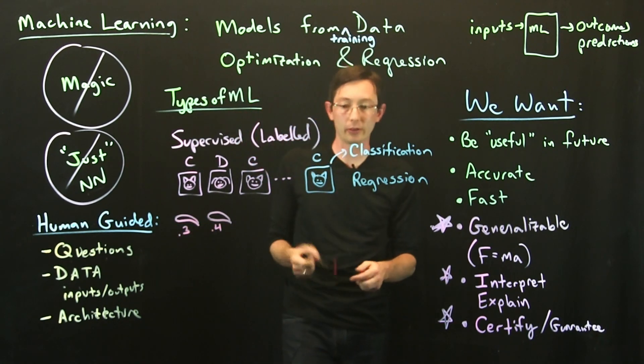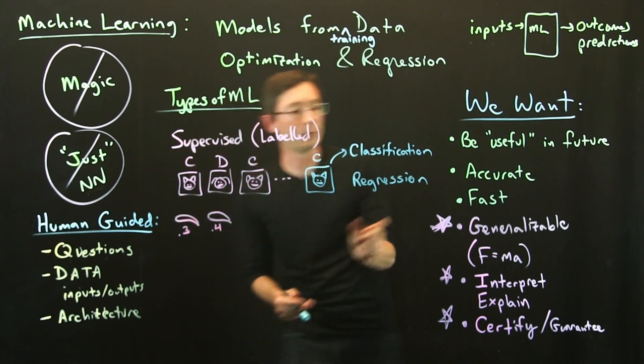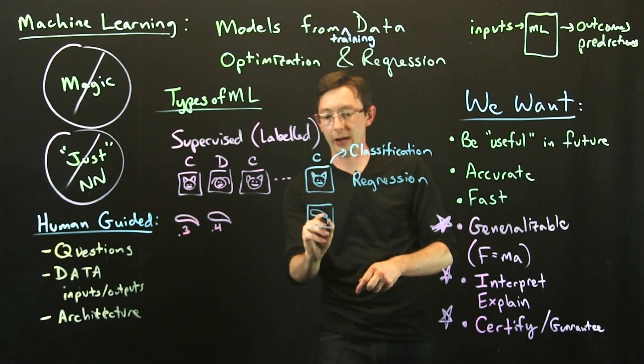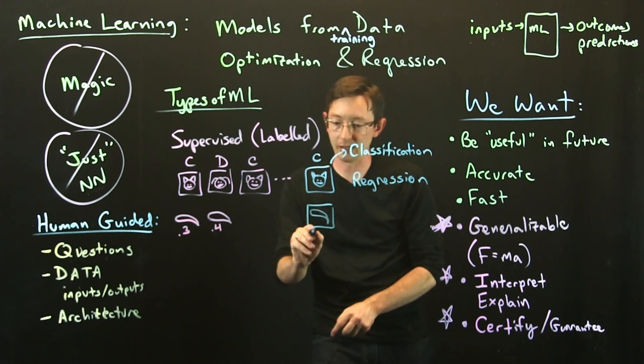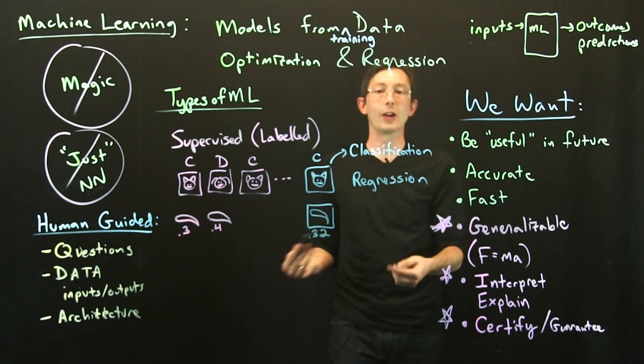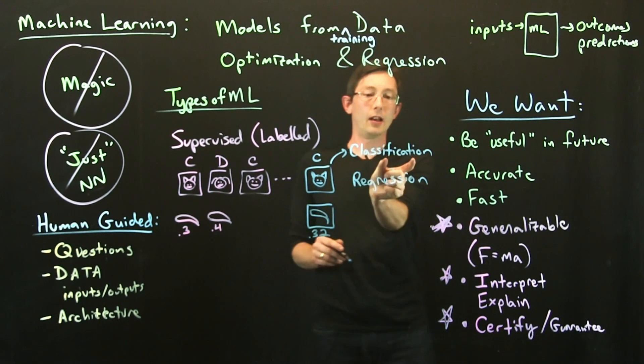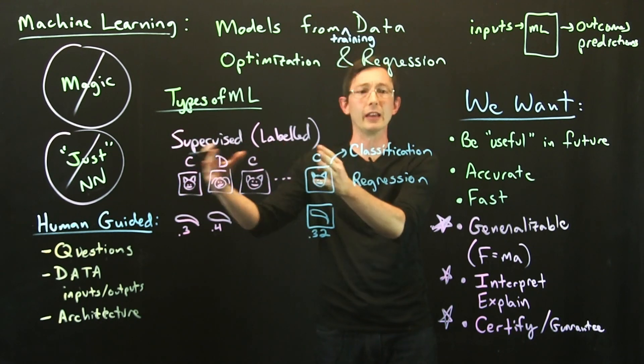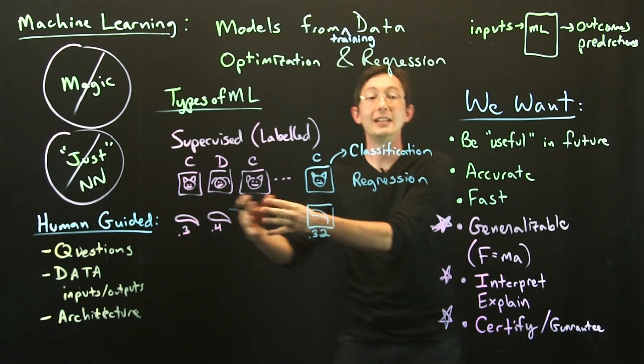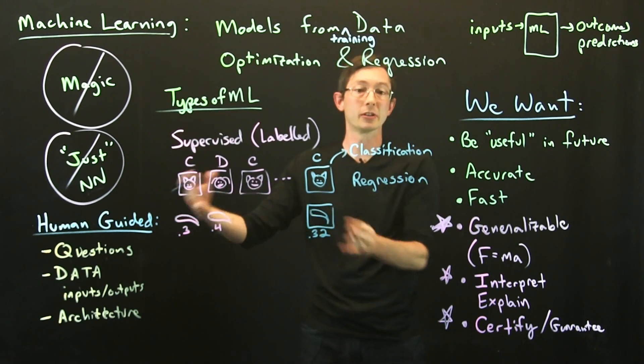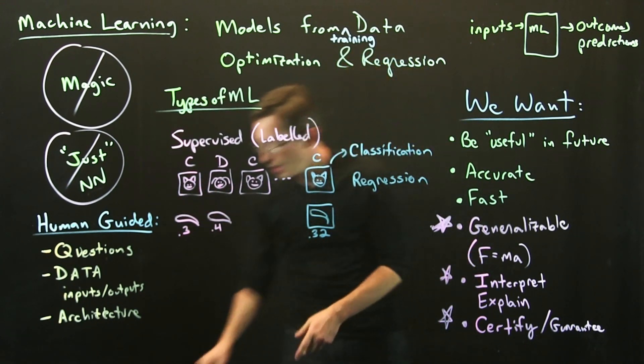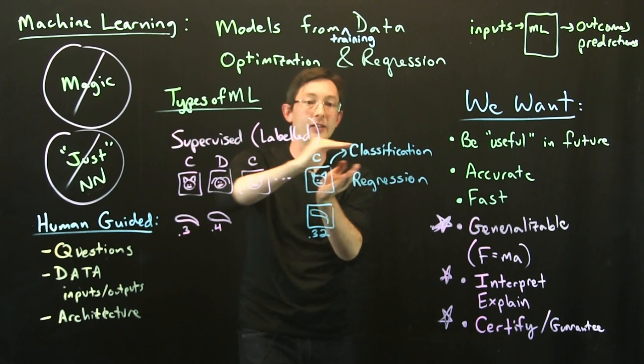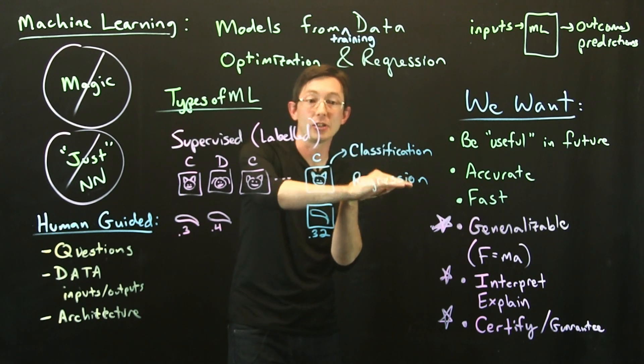What you would want to do with a regression model is in the future, if I have a new airfoil, I'd want to be able to tell you, 'Oh, that's going to be a 0.32 drag coefficient on that airfoil.' So this is classification for discrete data like categories—dogs and cats or discrete labels—and regression for continuously varying labels like the drag coefficient on an airfoil. So that's one big category of machine learning: supervised algorithms with classification and regression techniques.